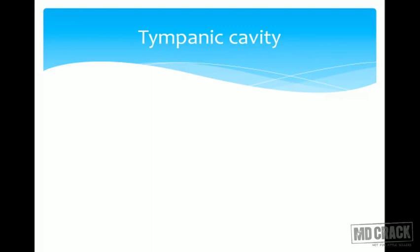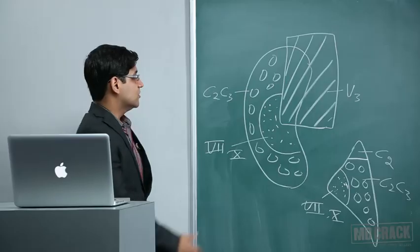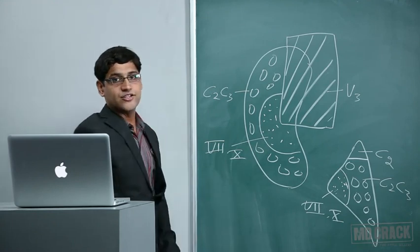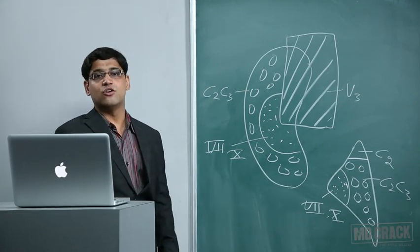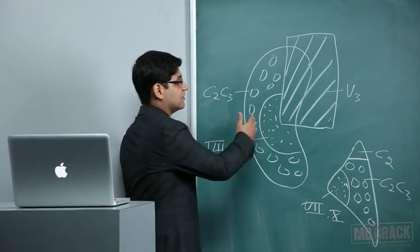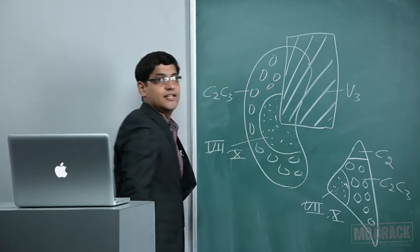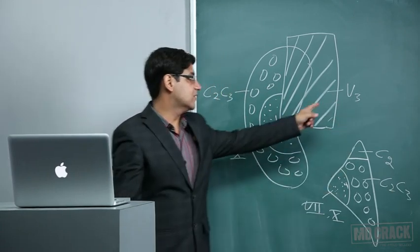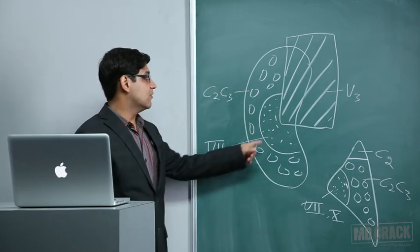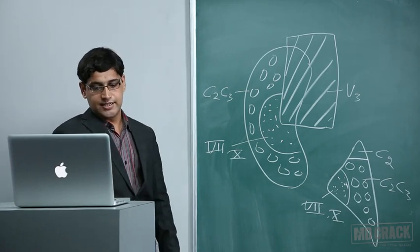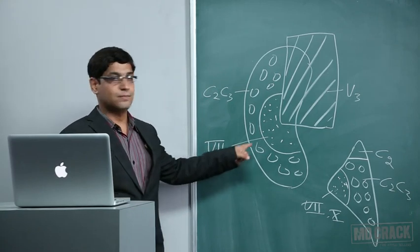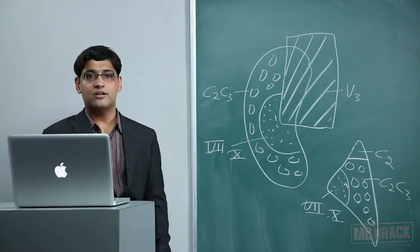The nerve supply of the external ear: the main nerve supply of the lateral surface of the pinna is the greater auricular nerve (C2 and C3). The anterior and superior portion is supplied by the auriculotemporal nerve, a branch of the mandibular nerve (V3). The area around the external auditory meatus is supplied by the seventh and tenth cranial nerves. The branch of the tenth cranial nerve is known as Arnold's nerve, or the auricular branch of the vagus nerve.